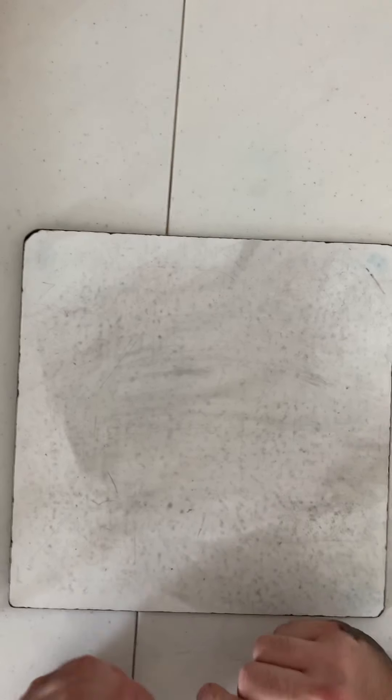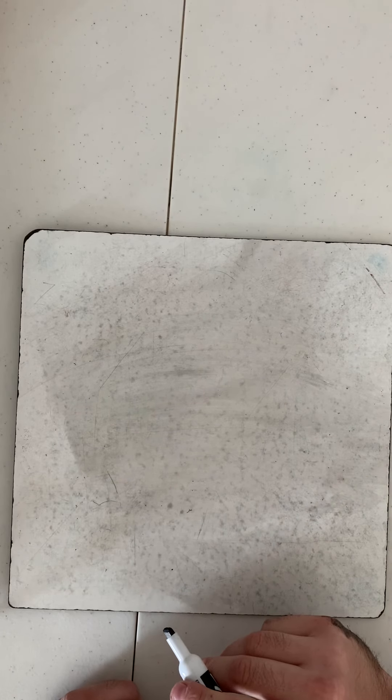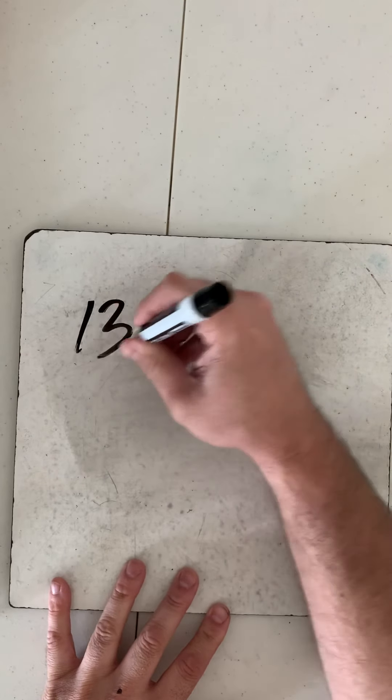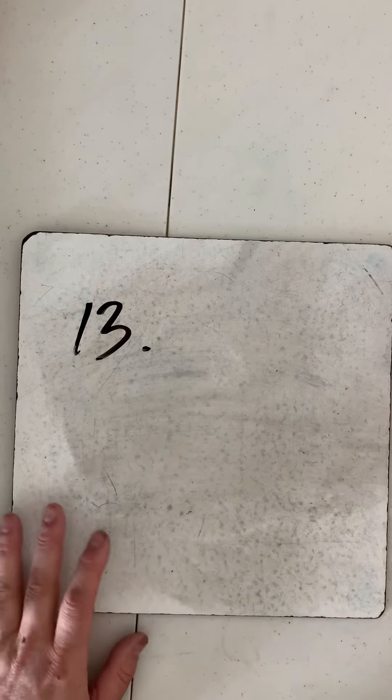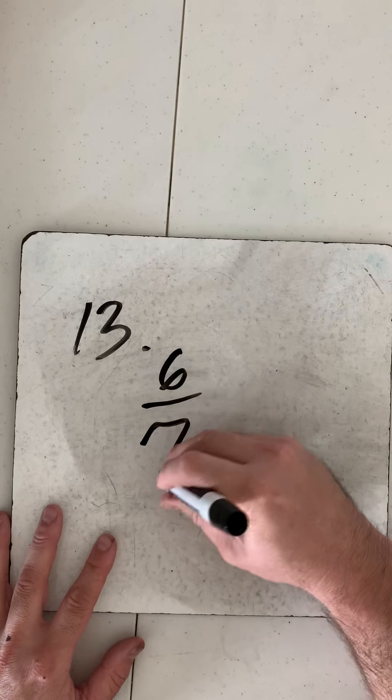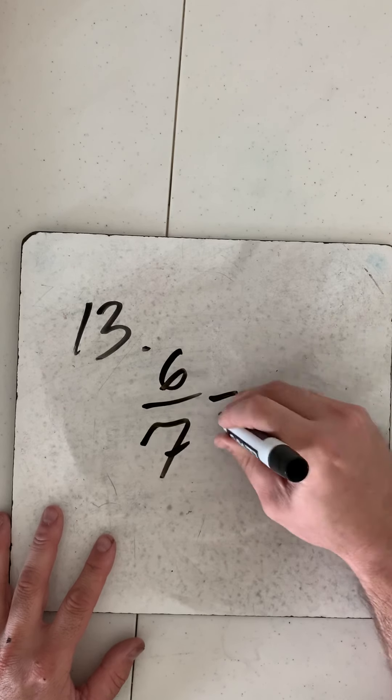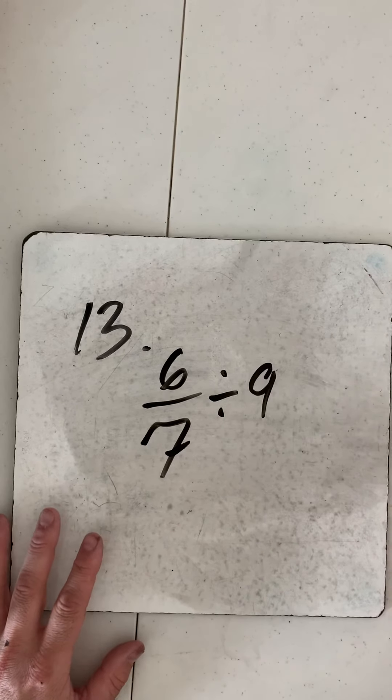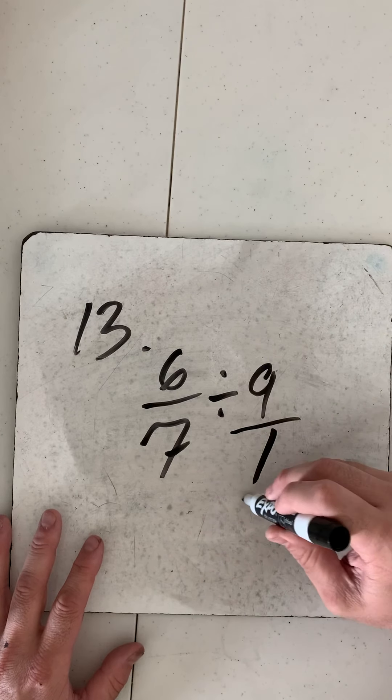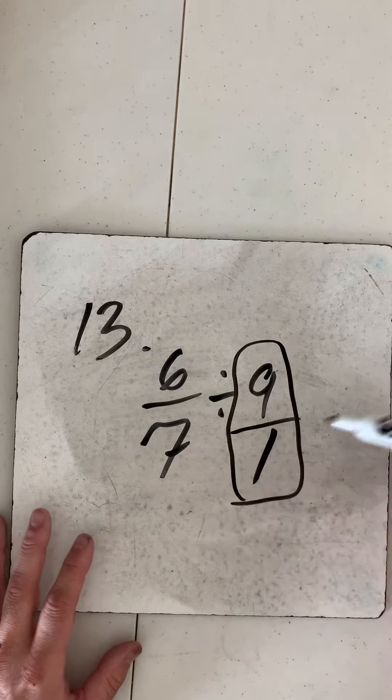We're going to take a look at page 221, number 13. This is an average problem: 6/7 divided by 9. First things, identify the whole number, put it over 1. Now I need to take this to make it the reciprocal, so 9 over 1 becomes 1 over 9. I'm going to change my sign.